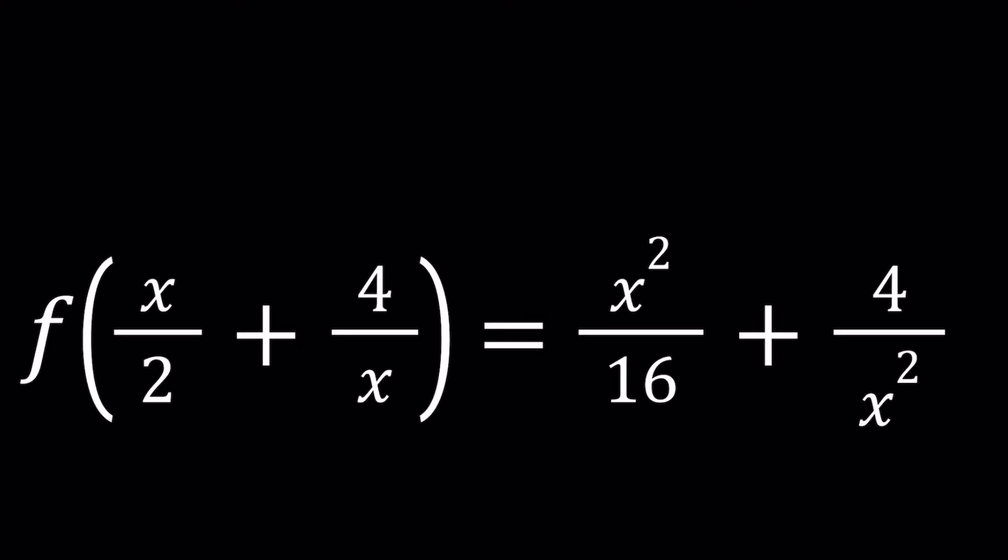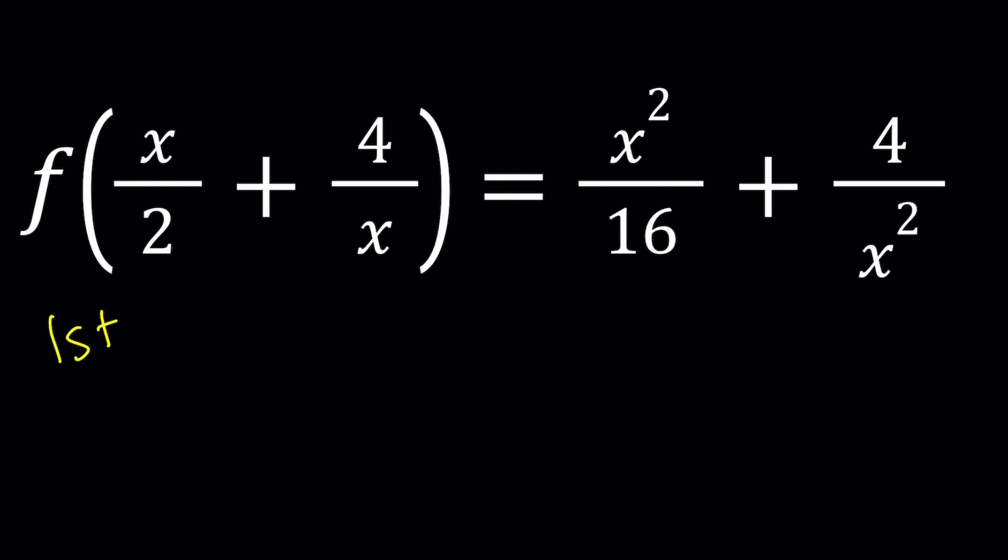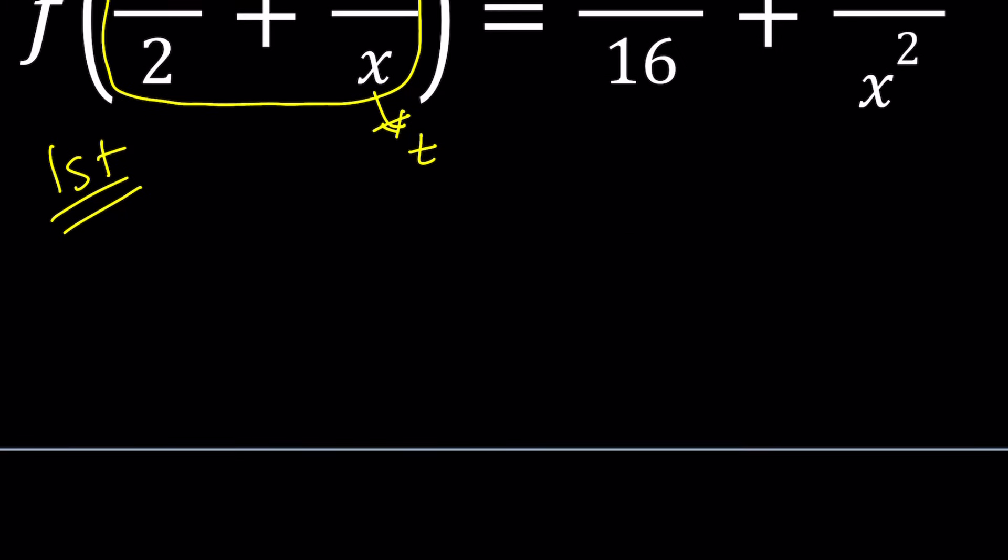Now, I'll be presenting two methods, and let's start with the first one. For my first method, I will do what is the most typical, calling this expression, the whole thing inside the parentheses, something. How about t? Let's call this whole thing t. Our goal is to find f of t in terms of t, then we can just change the variable. Because the variable doesn't actually matter as long as you use the same variable on both sides.